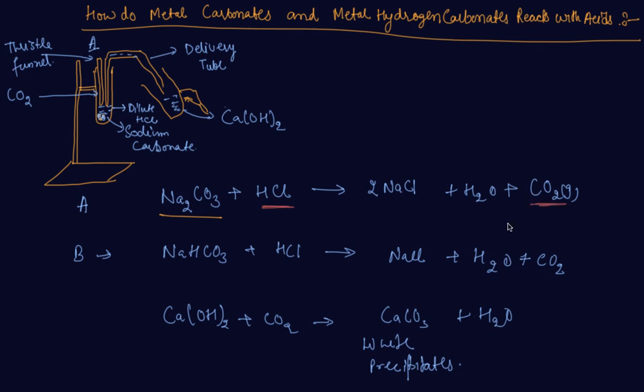And when this carbon dioxide gas reacts with calcium hydroxide, so this forms a calcium carbonate which gives a white precipitate at the bottom of the test tube.